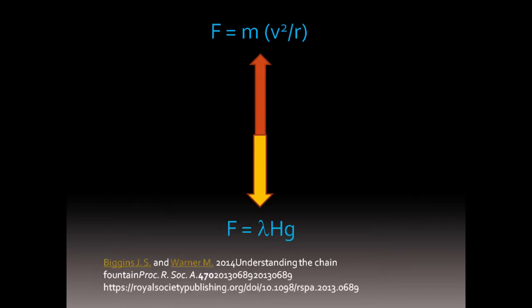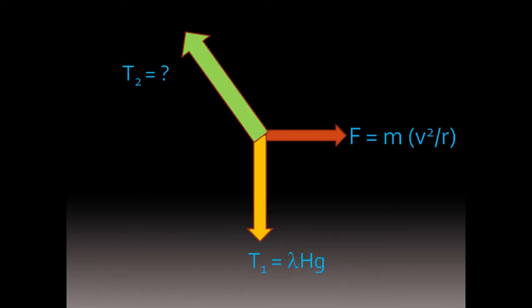Biggins and Warner assumed the downward vertical force from the chain itself was equal to this centrifugal force. Biggins and Warner continued to assume that you could use the small angle theorem to approximate the tension in the chain itself.